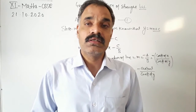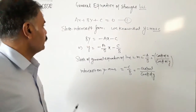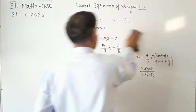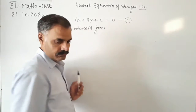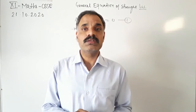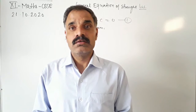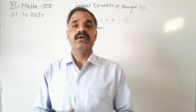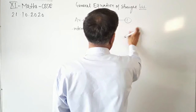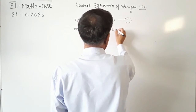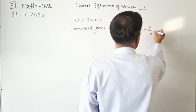Now we will convert the given general equation of the line in intercept form. We know that the intercept form of the equation of the line is X upon A plus Y upon B equals to 1, where A is the intercept on the X axis and B is the intercept on the Y axis.